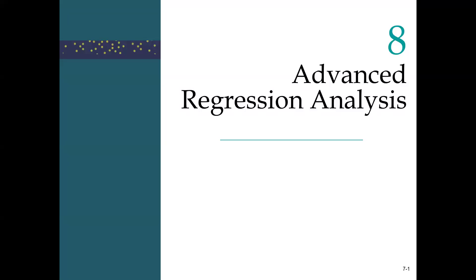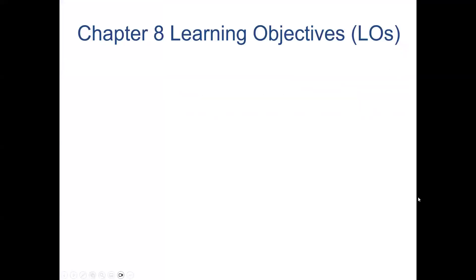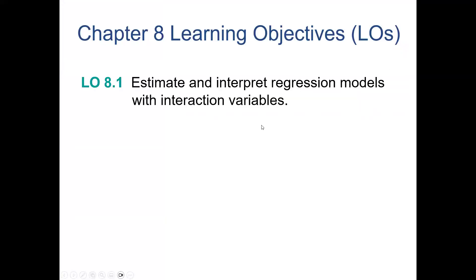This is a video on Chapter 8, Section 8.1. The learning objective is to estimate and interpret regression models with interaction variables. This could be considered part of the initial learning of doing regression analysis.